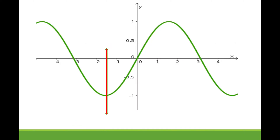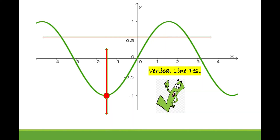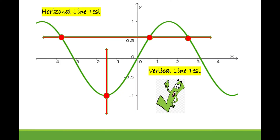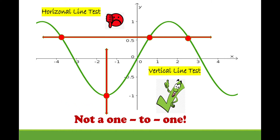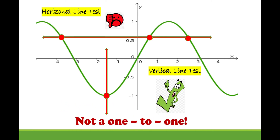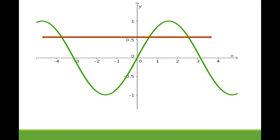Another graph: using a vertical line, it intersects at one point, so it passes the vertical line test. However, using a horizontal line, it intersects at more than two points, so it does not pass the horizontal line test. Therefore, it is not a one-to-one function.